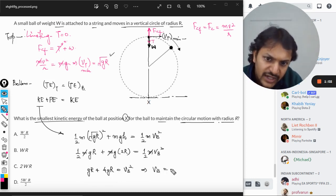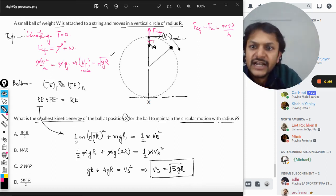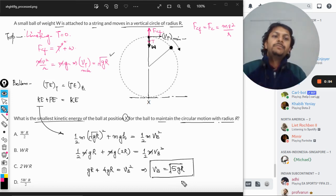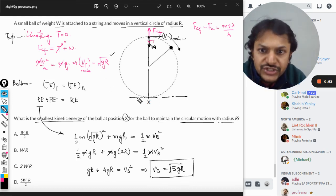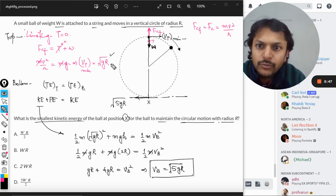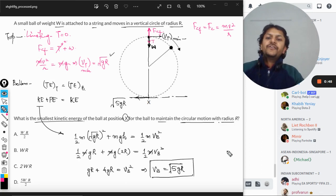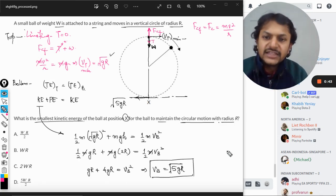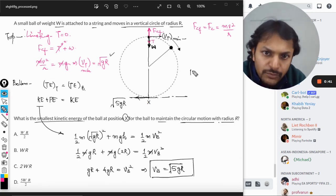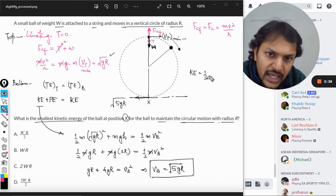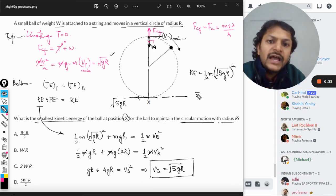This is the minimum velocity that must be maintained by the body at the bottom position if it wants to maintain its circular motion. From here we can find the kinetic energy that will be required. So minimum kinetic energy will be half mv square and this is coming out to be mgr.